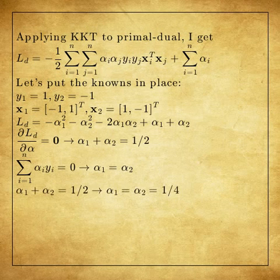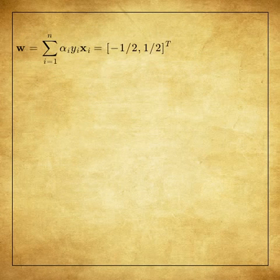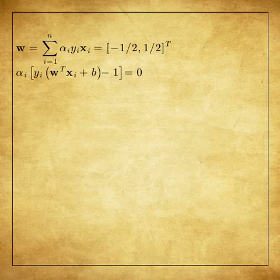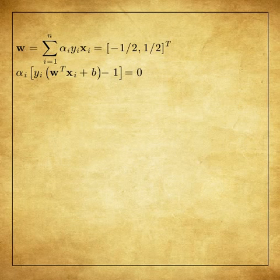Then, we can go back to find the normal vector w. To determine the bias, we need to use the non-zero Lagrange multipliers. In our case, for each one, b turns out to be zero.